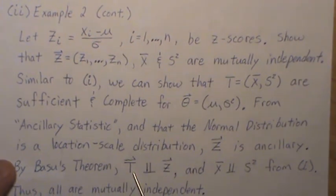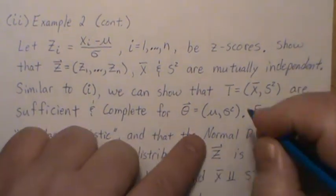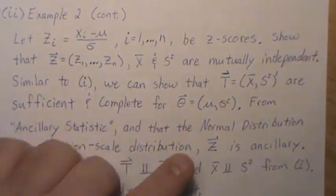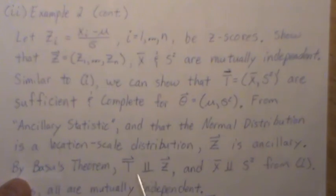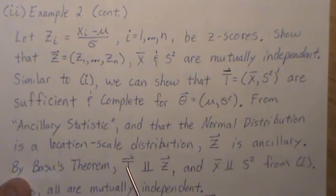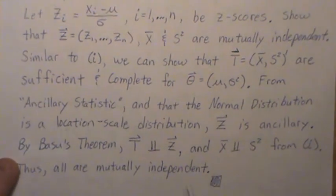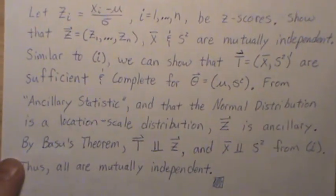So this complete sufficient statistic is X bar and S squared. So all those Z scores are independent of X bar and S squared, but we showed that X bar and S squared were independent in part one. So thus they're all mutually independent, which is kind of a neat result in itself.